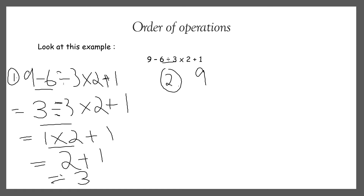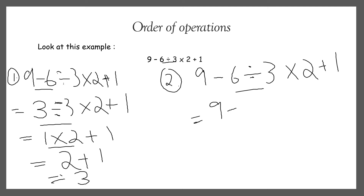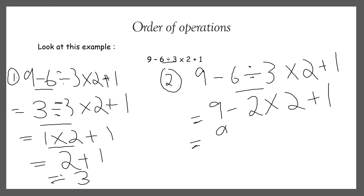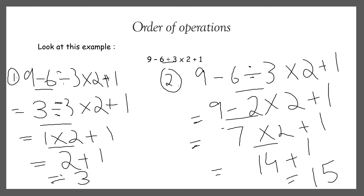In the second way, let's do division first: 9 minus 6 divided by 3 multiplied by 2 plus 1. If we do division first, 6 divided by 3 is 2 because 3 twos are 6. Then we do subtraction: 9 minus 2 is 7. Then multiplication: 7 multiplied by 2 is 14. And plus 1 is 15. We got two different answers — subtraction first gave 3, division first gave 15.